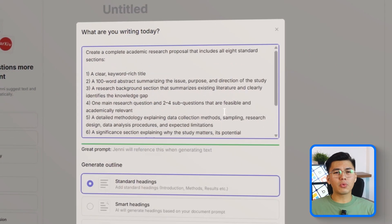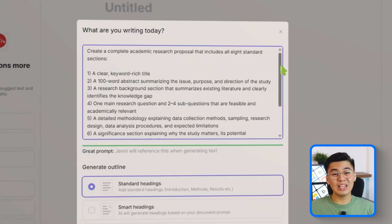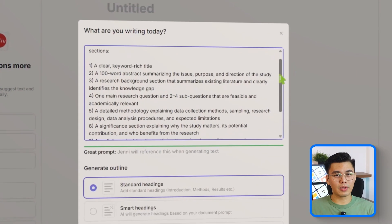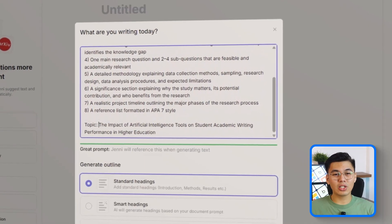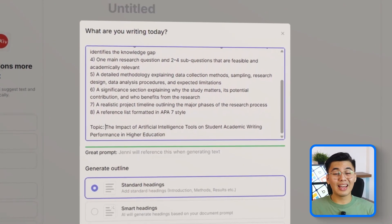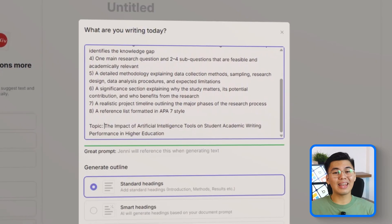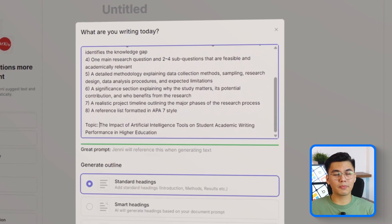Four, one main research question and two to four sub-questions that are feasible and academically relevant. Five, a detailed methodology explaining data collection methods, sampling, research design, data analysis procedures, and expected limitations.